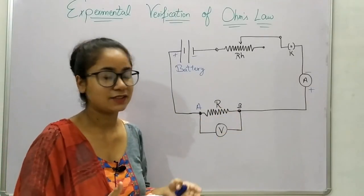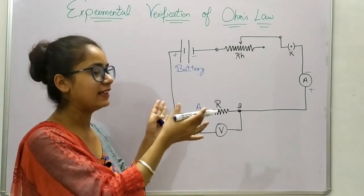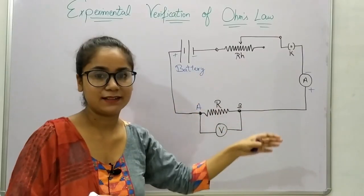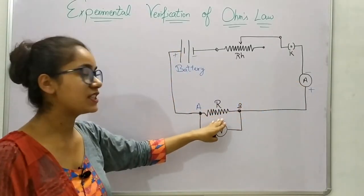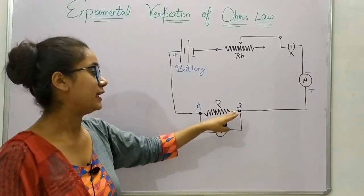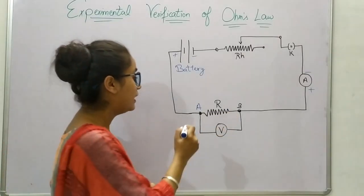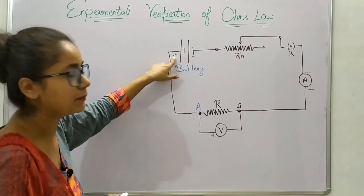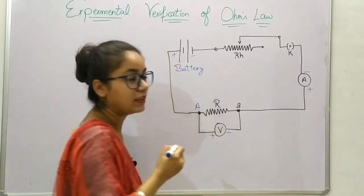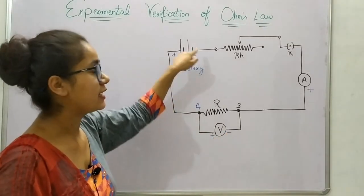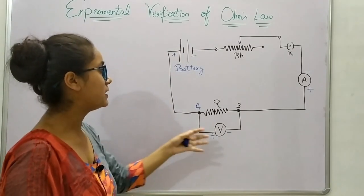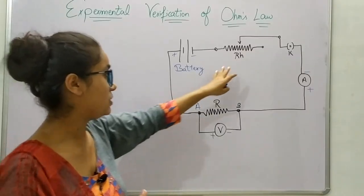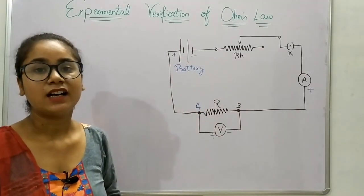The voltmeter is kept in parallel with the resistance so that it can easily measure the potential difference. So you will need to keep the ammeter in series with the resistance and the voltmeter in parallel with the resistance. Just like with the ammeter, the positive terminal of the voltmeter is connected to the positive terminal of the battery, and the negative terminal of the voltmeter is connected to the negative terminal of the battery.